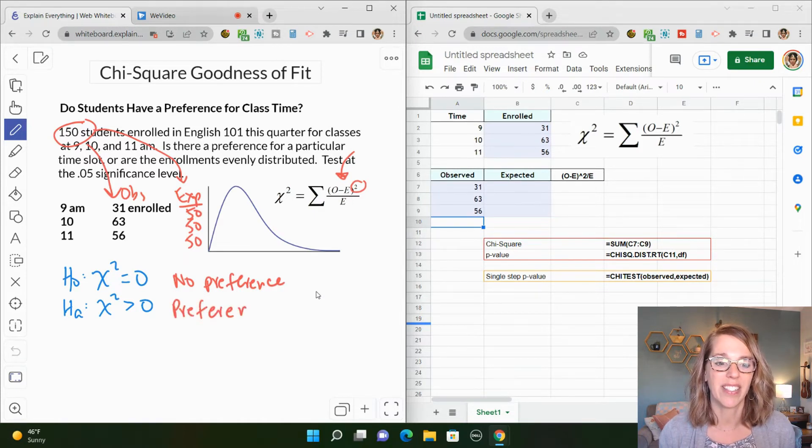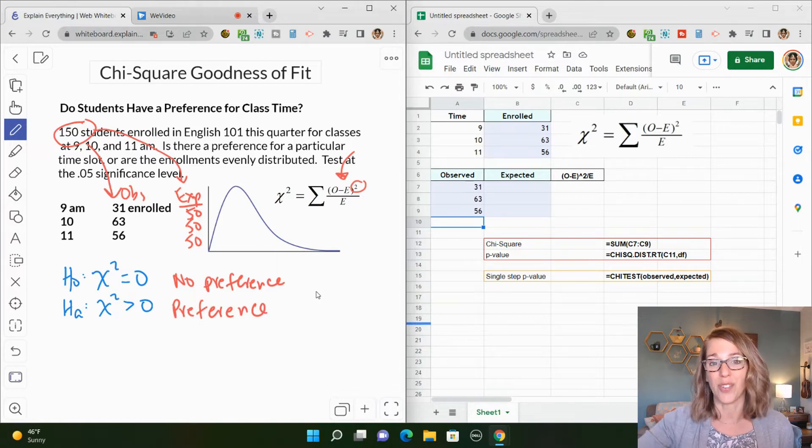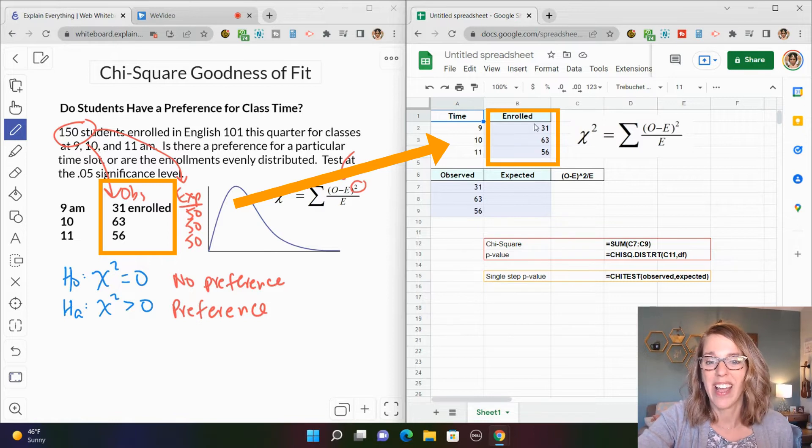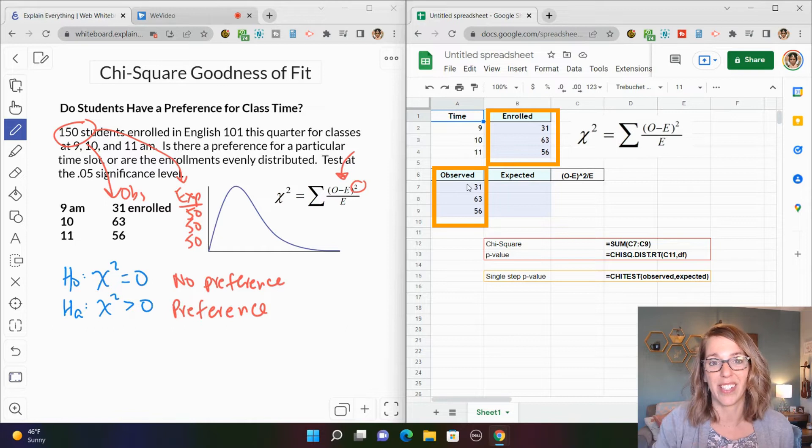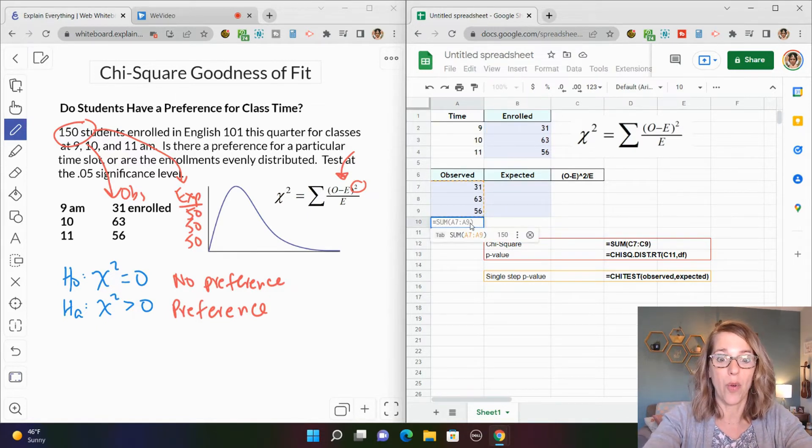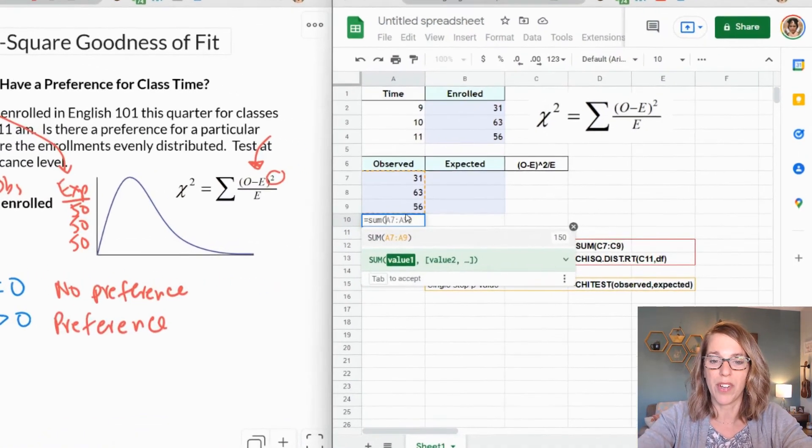This is really easily done in either Google Sheets or Excel. Again, my steps are the same. So I went ahead and took our observed data and put them over here into Google Sheets or Excel, same thing. I also copied the data over and I put it in an observed and expected table. So the enrollment data goes under observed, that's our actual data. The expected data I know it's going to be 50, 50, 50.